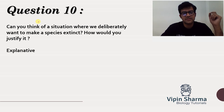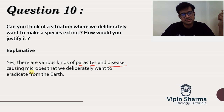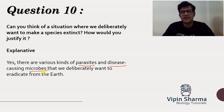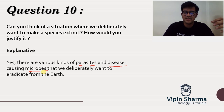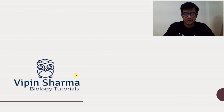Question number ten asks: can you think of a situation where we deliberately want to make a species extinct? The answer is yes. For example, a species of microbes or parasites which are harmful to us or disease-causing microbes — we deliberately want those species removed from the environment. Hepatitis vaccines exist, polio virus eradication is targeted through vaccines, and malarial parasites are addressed through medicines. So yes, the situation is parasites and disease-causing microbes — we deliberately want to eradicate them from Earth.